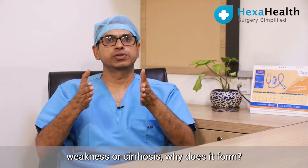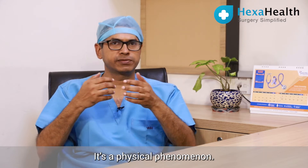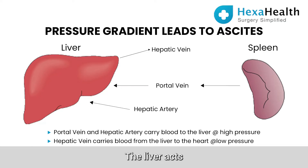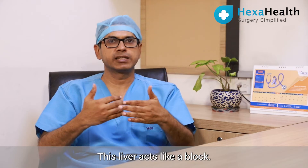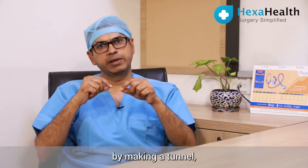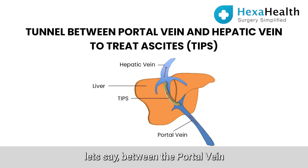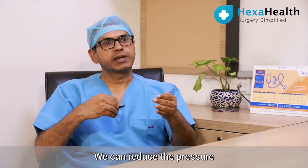When ascites is due to liver cirrhosis, it forms because of a pressure gradient — a physical phenomenon. The liver acts as an impediment to blood flow. By making a tunnel between the portal vein (inflow) and the hepatic vein (outflow), called a TIPS procedure, we can reduce the pressure gradient across the liver.